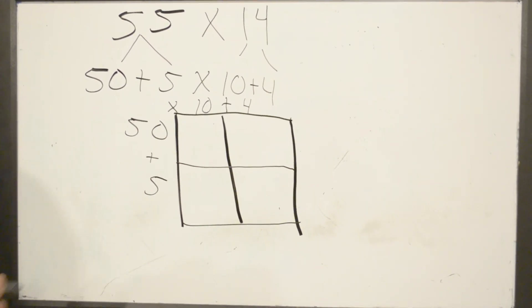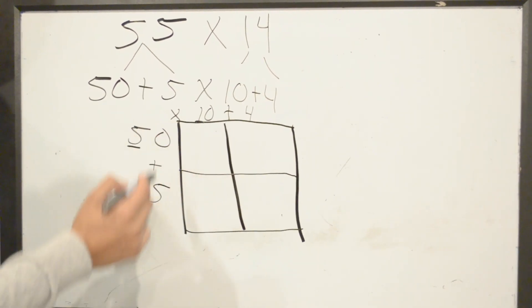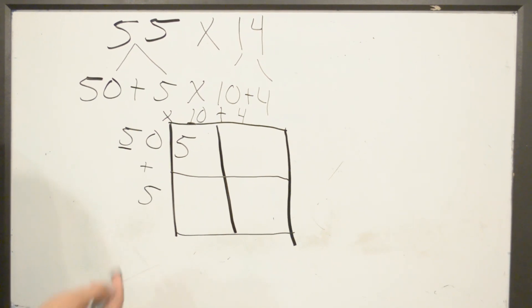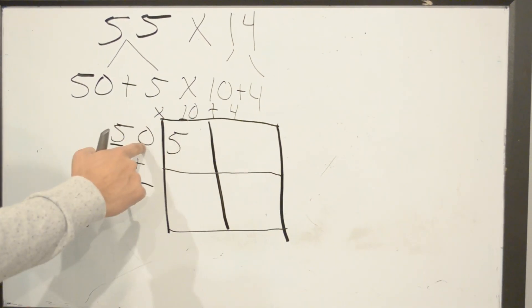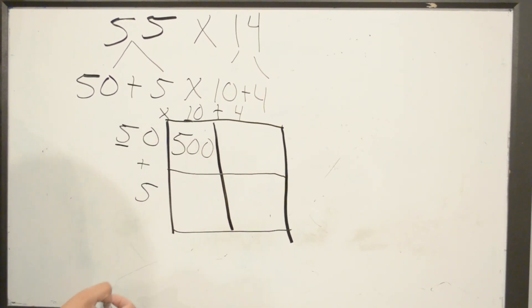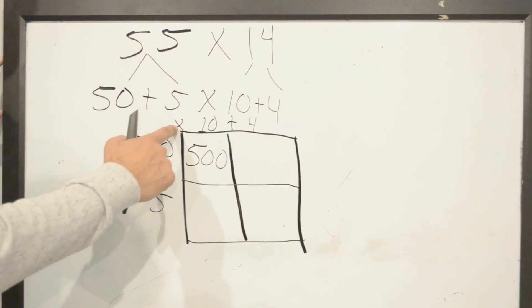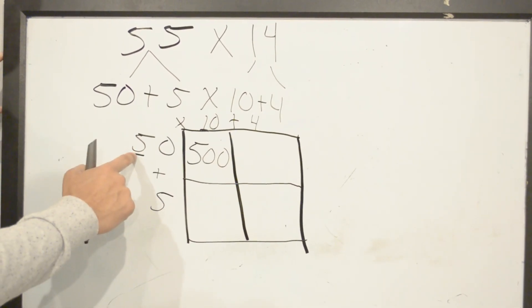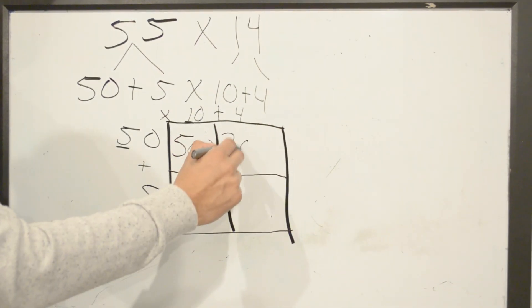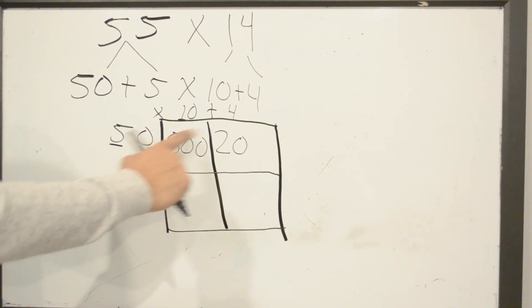We'll multiply 50 times 10. 5 times 1 is 5, then all we have to do is count how many zeros we have. We have 1, 2, and we just add 2 zeros. Then we multiply 50 times 4. Multiply 5 times 4 is 20, and we check again how many zeros do we have. We have 1, so we just add 1 zero.